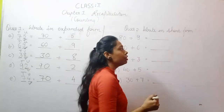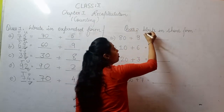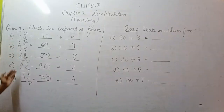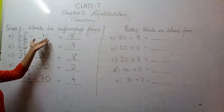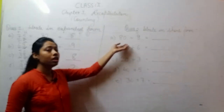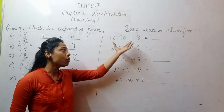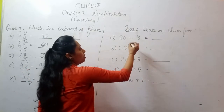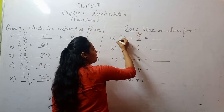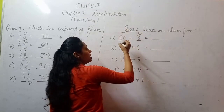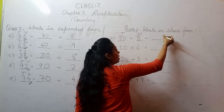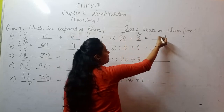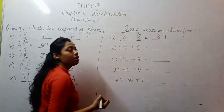Now moving to question number 2. Question number 2 says: write in short form. In question 1, you were given short forms and had to write them in expanded form. Now in question 2, you are given expanded form and have to convert it to short form. This digit is your units place and this one is your 10th place. We write the unit digit, and from the 10th place we only take the non-zero digit — so 80 plus 9 gives us 89.